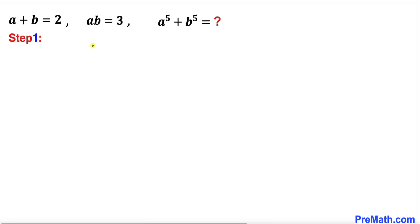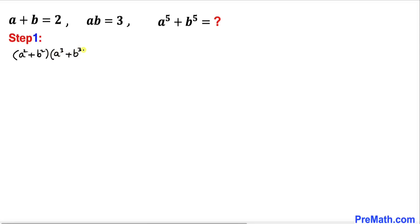Since we are looking for the value of a power 5 plus b power 5, we are going to multiply two binomials: the first one is a squared plus b squared, times a cubed plus b cubed.